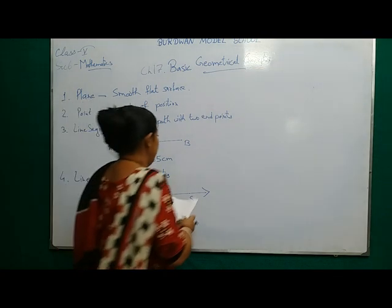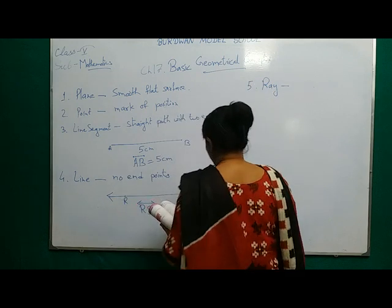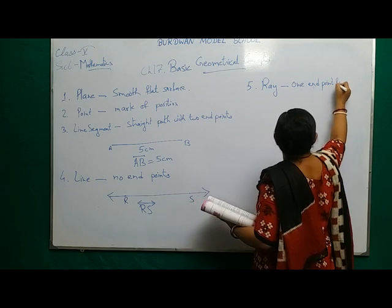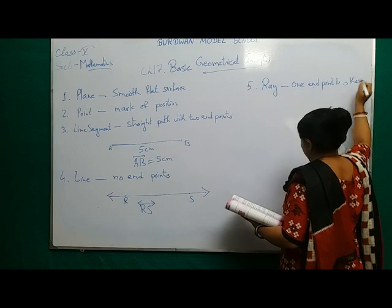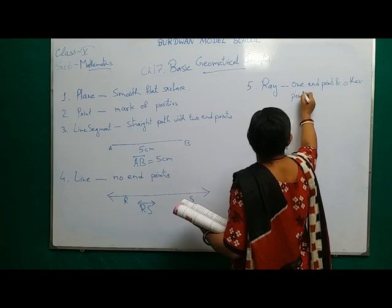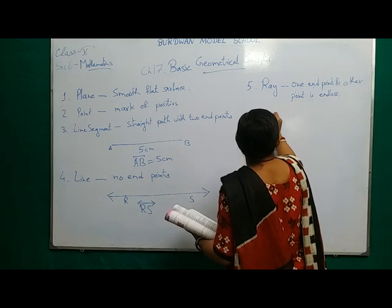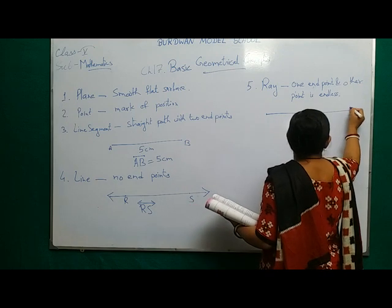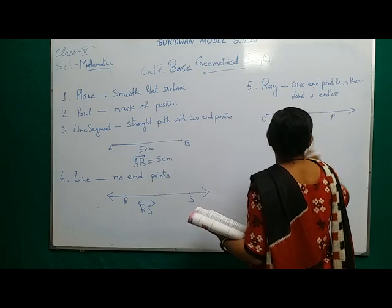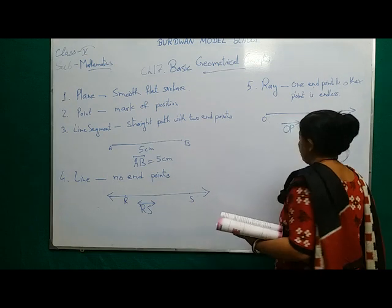Next comes ray, that is number 5. A ray has one endpoint and the other point is endless. Suppose I am starting the ray from here and it is going endless, and I am naming it O, and any point I am taking here as P. So I will denote OP with one side arrow and one side dot. This is the ray.